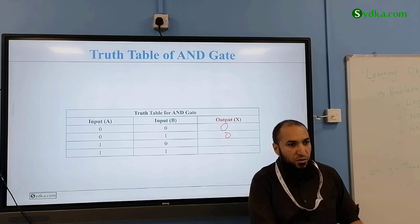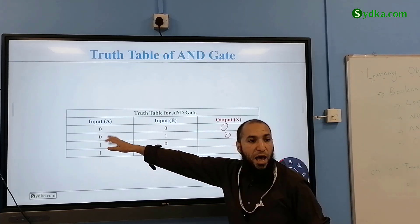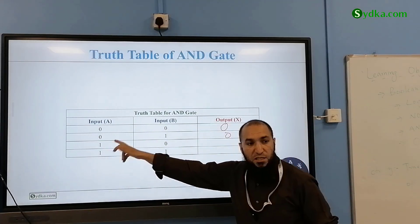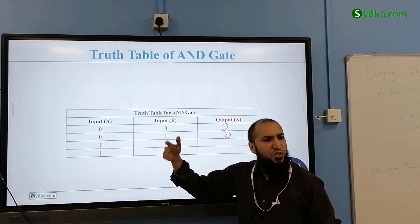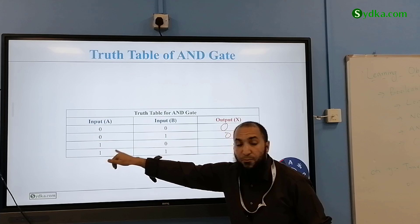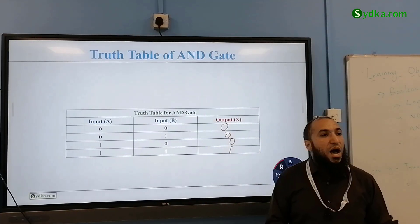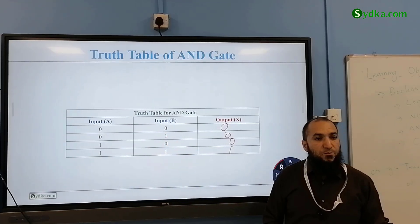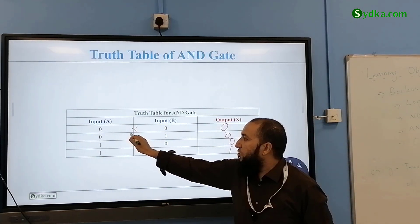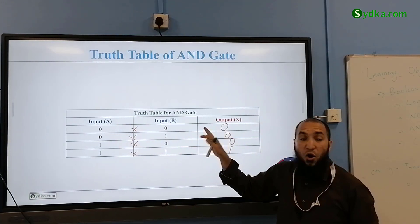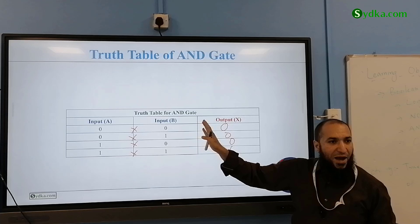If this is absent and this is present, you can't have it. If this is present and this is absent, you can't have it. If you have both of them, then you can have one. Another easy way for this particular one only is to use multiplication. Zero times zero, zero times one is zero, one times zero is zero, and one times one is one. This is only for the AND gate.